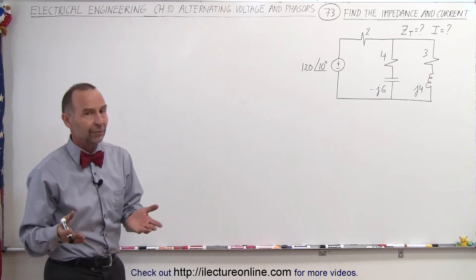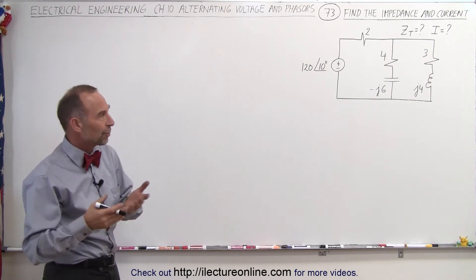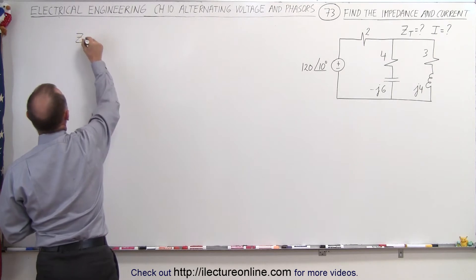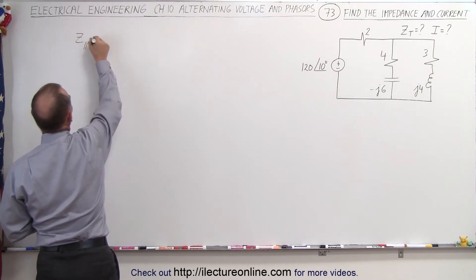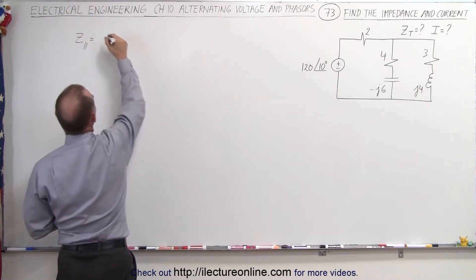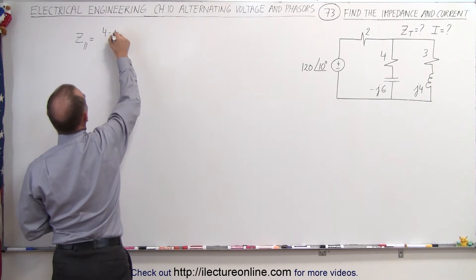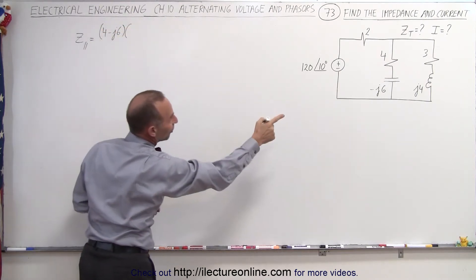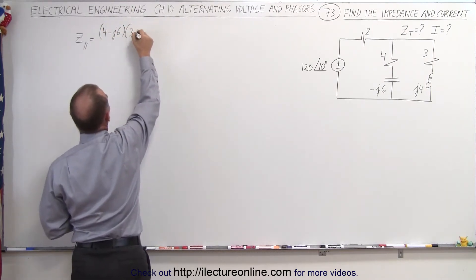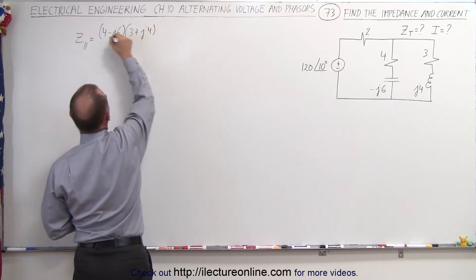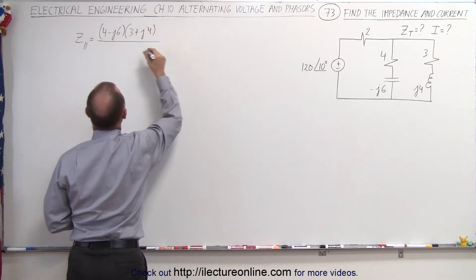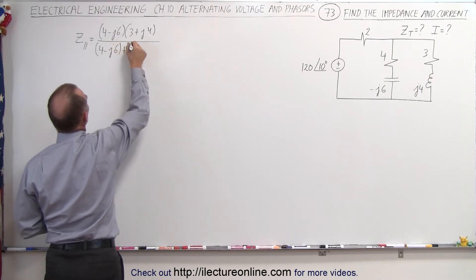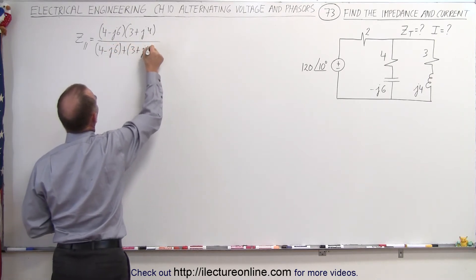Since they are in parallel, we use the product over the sum rule. So the impedance of the parallel branch is equal to the product — that would be (4 minus J6) multiplied times (3 plus J4) — and then we divide that by the sum of those two, which is (4 minus J6) added to (3 plus J4).